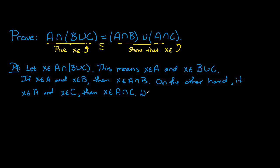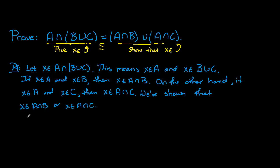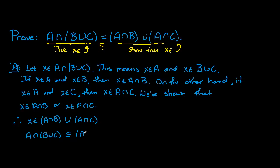So what have we shown? We've shown that X is an element of either A intersect B, or X is an element of A intersect C. Therefore, X is an element of (A intersect B) union (A intersect C). This shows that A intersect (B union C) is a subset of the right-hand side. We're halfway done.